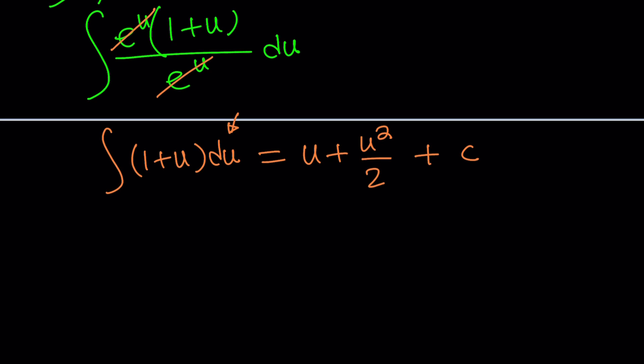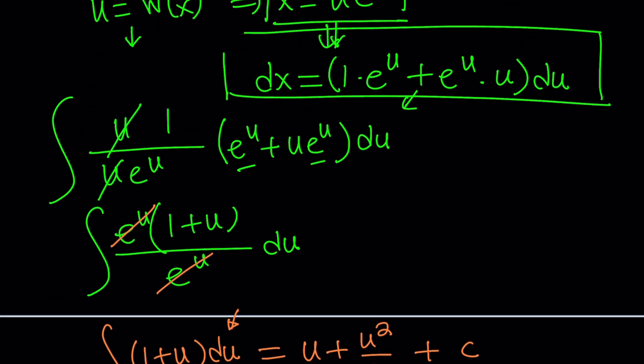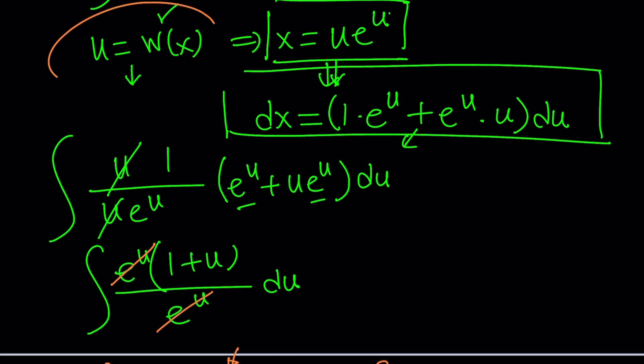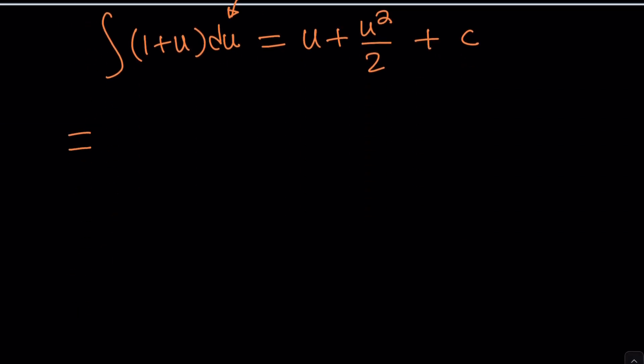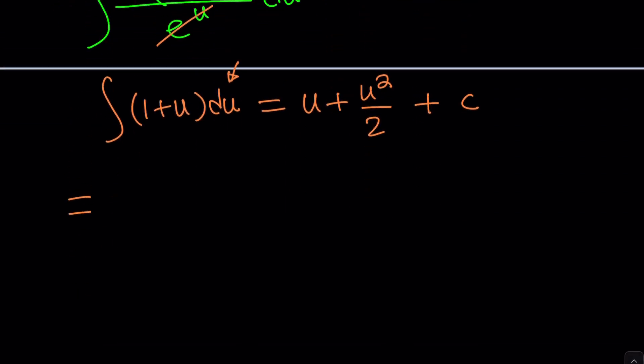Now, let's go ahead and take a look at this result, because we still have to back substitute. What is u? Who are u? What are u? u is equal to W of x. So, we can go ahead and replace u with W of x. And then, of course, we're going to have W of x squared divided by 2 plus c.